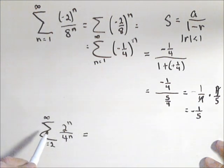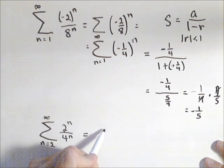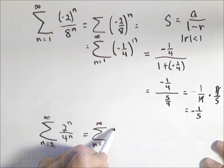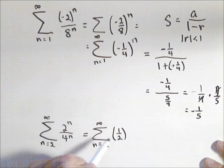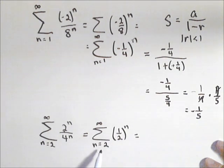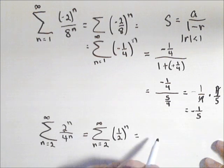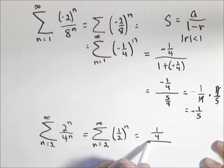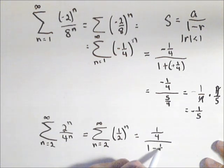Now, we can do this one. And we got the summation of n equals two to infinity. By property of exponents, we get two over four, or one-half to the n. My first term is gonna be when n is two, so that's actually one-fourth, because one-half squared over one minus one-half.